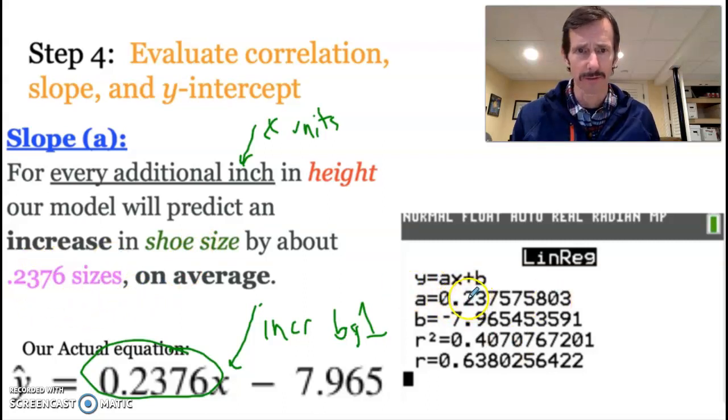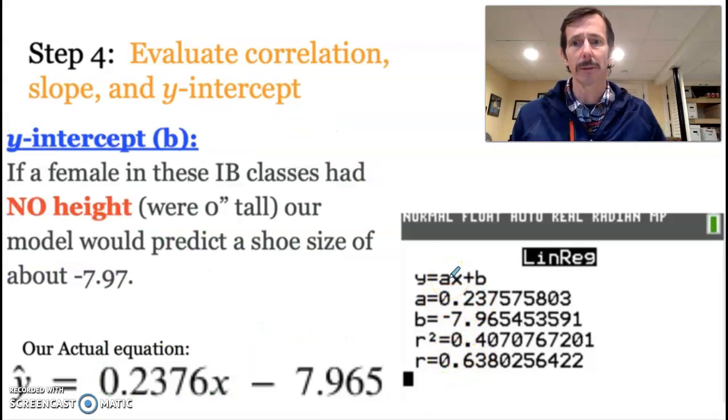It also is not a coincidence that the slope is positive and the correlation is positive. When the slope is negative, the correlation will be negative. And now we're going to talk about the y-intercept, which again is this b value, which in our case was this number right here.